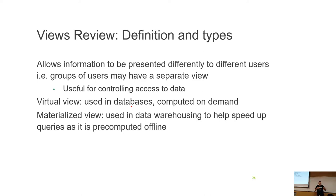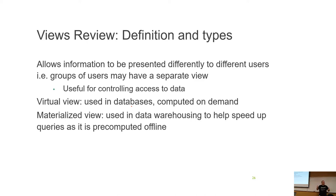Views allow information to be presented differently to different users. Depending on how the application is written, it may switch out which view is used so that less data gets pulled back, data gets filtered, or columns are hidden. Views are a good way of controlling access to data, though that's a bit of an antiquated concept. Views more often are used for reporting and for simplifying complex calls, since most applications now have built-in controls for what each user is allowed to see.